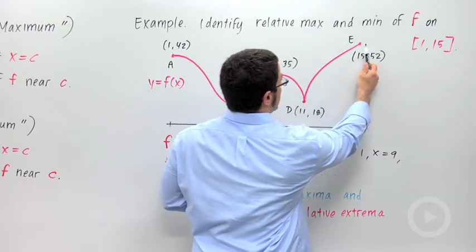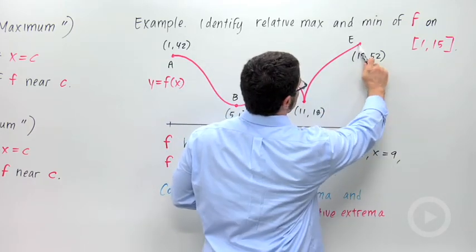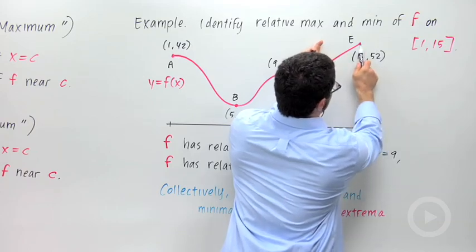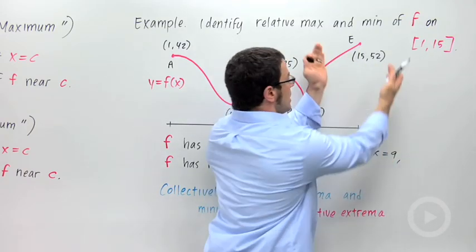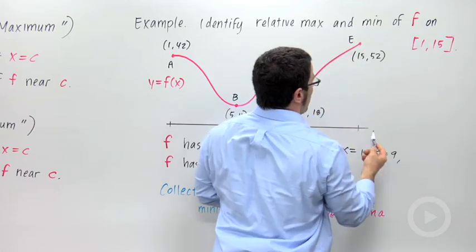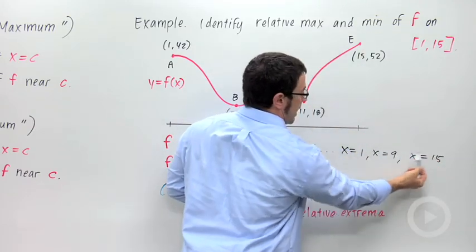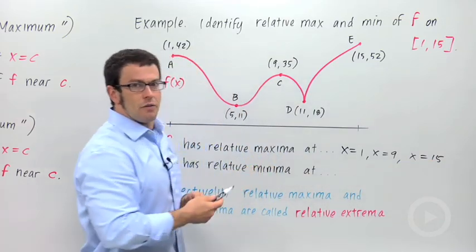And finally, at this end point, the graph seems to hit another maximum. If you look at it, 52 is the value of the function here. And that's the highest value in some interval around that point. And so at x equals 15, we've got a relative maximum. So we have 1, 9, and 15 are the locations of the relative maxima.